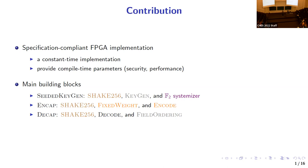The seeded keygen is highlighted to differentiate from previous work, which did not implement a PRNG inside the key generation module. SHAKE256 is a shared module used for hashing, PRNG, and seed generation. In the seeded keygen, they introduce an early-abort systemizer and secret key compression. The F2 systemizer is the main contribution because it significantly reduces the average cycle count of public key generation.